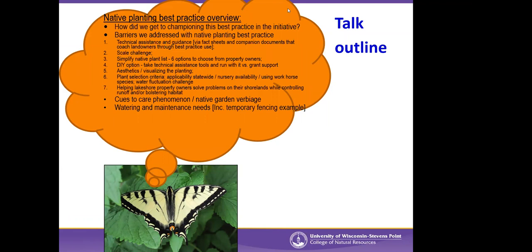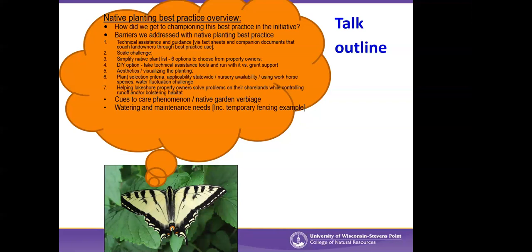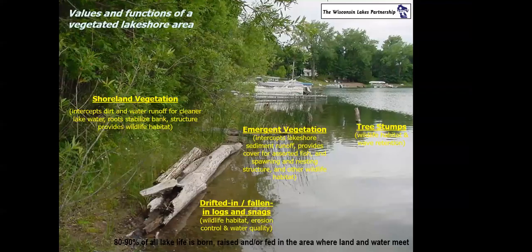What we're going to go through is a native plant 350-square-foot planting that's part of the Healthy Lakes program, but it's also the kind of project that anyone can just take and do themselves. We'll be going through a guide created as part of the Healthy Lakes program to help guide landowners through a native planting best practice installation. The guide has fact sheets, the scale is small, and there are six options to choose from, each with a different target from a planting point of view. It can be a do-it-yourself approach or you can utilize the surface water grant program and the Healthy Lakes grant option.